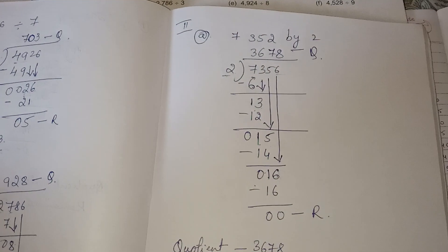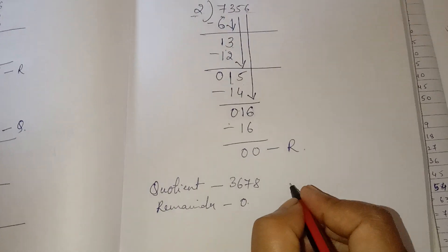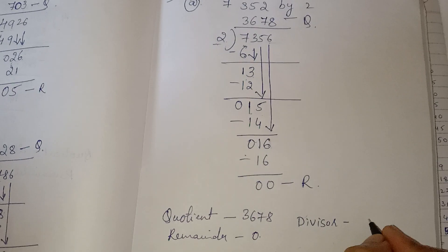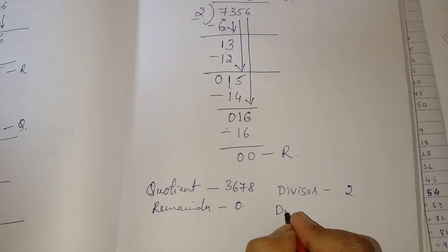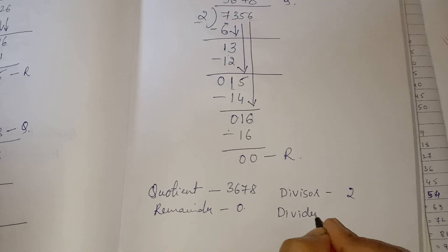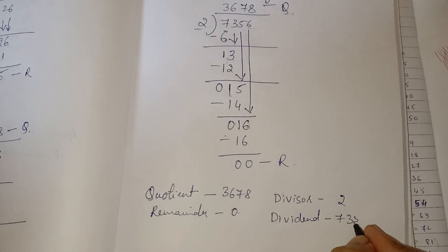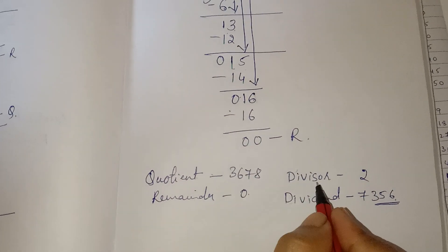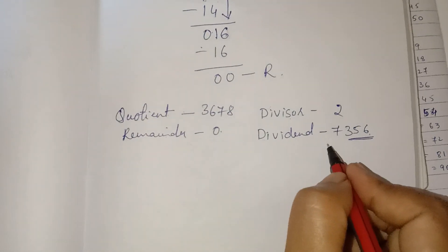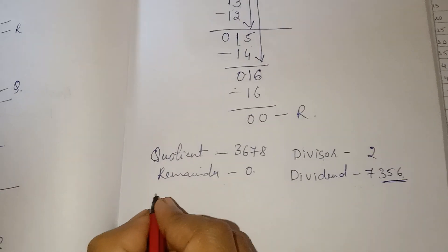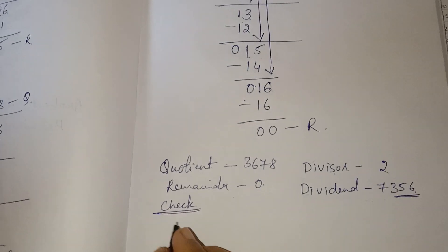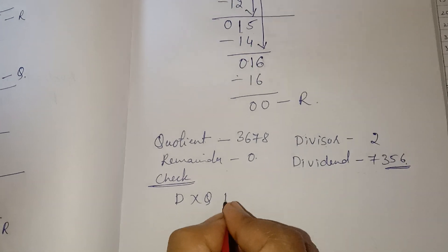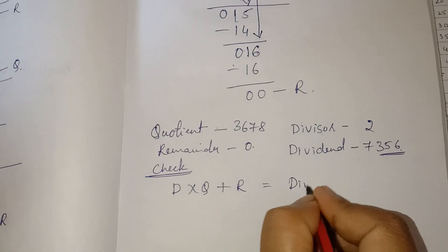Write the dividend and divisor here because we are checking the answer. Divisor is 2, dividend is 7352. When we multiply quotient and divisor and add the remainder, we get the dividend. The relation is: divisor into quotient plus remainder equals dividend.